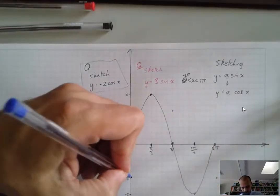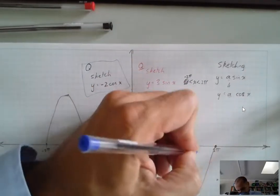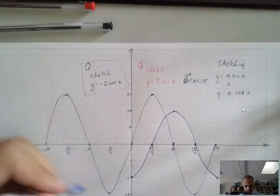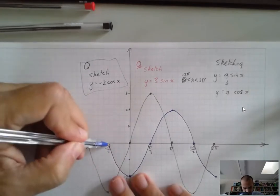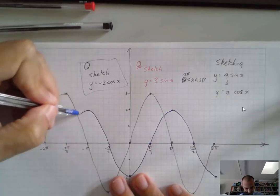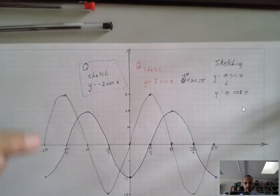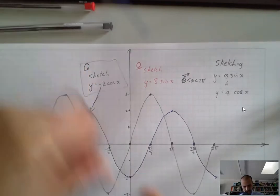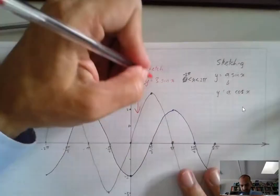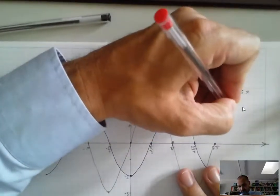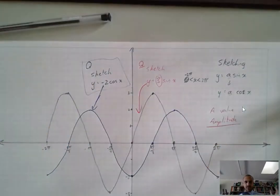Nice curves — I'm using a pen this time, living dangerously. And again, I could do that all the way backwards as well if I wanted to. It really depends on how the question is worded and how far they want you to sketch it. So that's y equals negative 2 cos x, and that one in pencil is y equals 3 sin x. The a value tells you the amplitude — that's what it does.